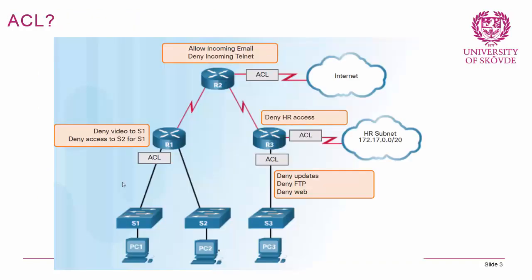So, what is an ACL? In essence, an ACL is a way to implement basic firewalling on routers. An access control list is a list of rules that dictate what traffic is allowed to come in or out of the router. For instance, you can set an ACL on a router towards the internet that allows incoming email but denies incoming telnet because you don't want that traffic.